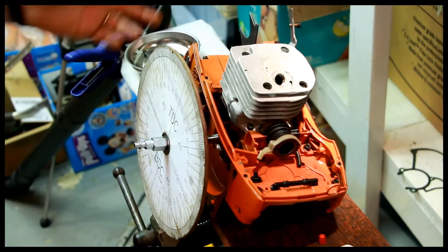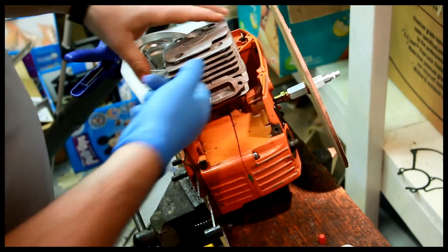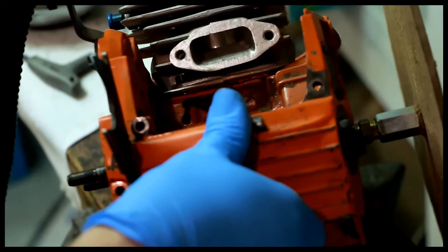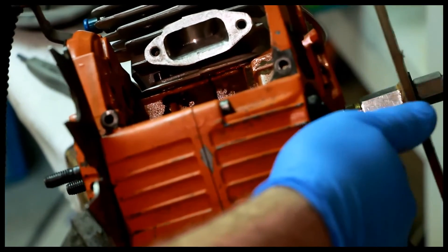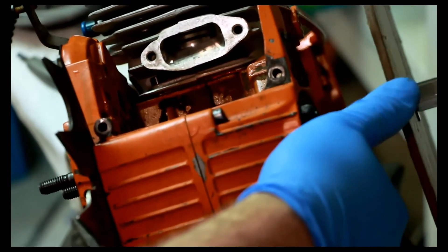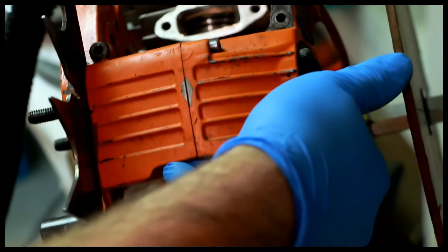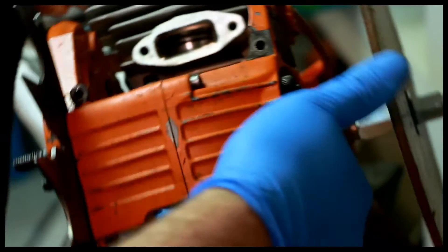Now the piston's at top dead center. A lot of guys do this different. I'm going to get the exhaust timing. What I'm going to do is shine a light in here and look and see when I see light. If you look in the exhaust right now, you can't see any light. As you move the wheel around, there'll be a point at which it opens and you see light.